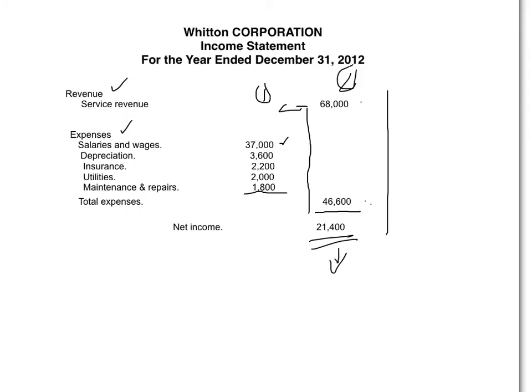This net income goes to the common shareholders, and the statement for the common shareholders is the retained earnings statement, which we will do next. The retained earnings statement is also a time period statement for Witten. We are going to look at what the earnings were at the beginning of the year — the retained earnings at the beginning of the year, which was $31,000.